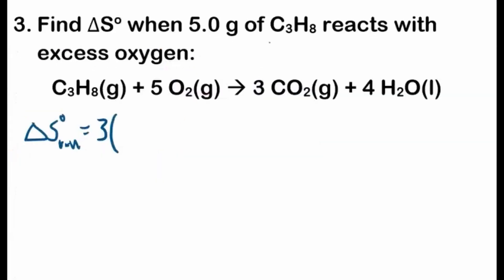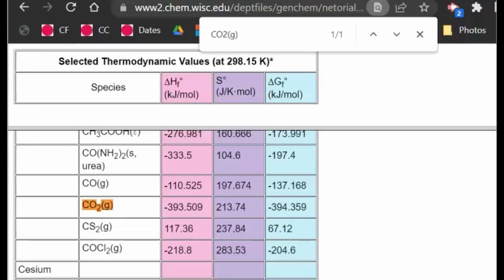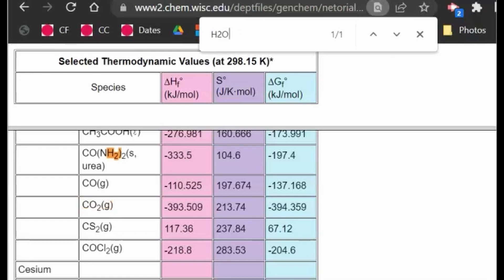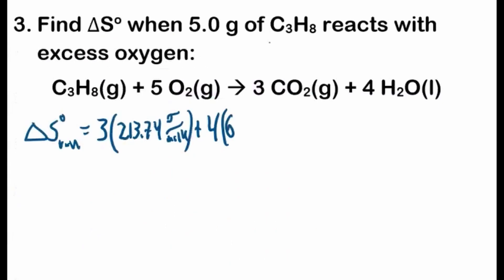That's 213.74, so 213.74 joules per mole kelvin, plus the entropy, molar entropy of water, and this is liquid, so that's very important to look that up, make sure it's in the liquid, H2O, H2O liquid here, 69.91, so 69.91 joules per mole kelvin.